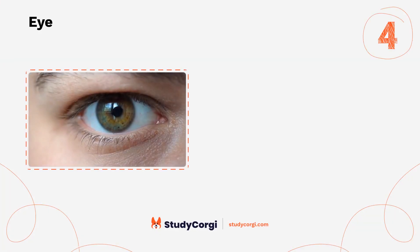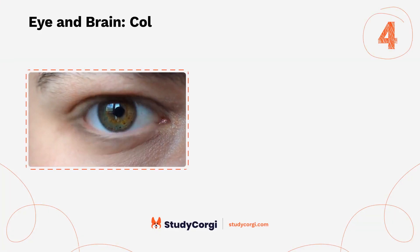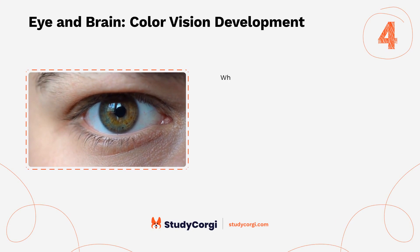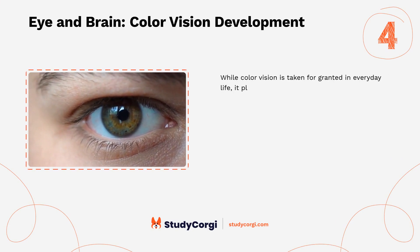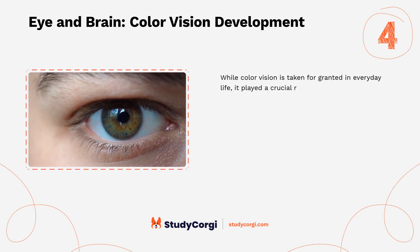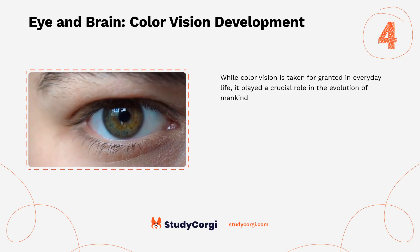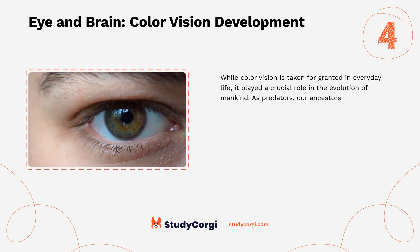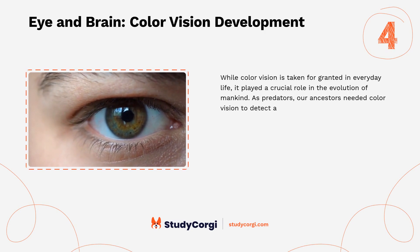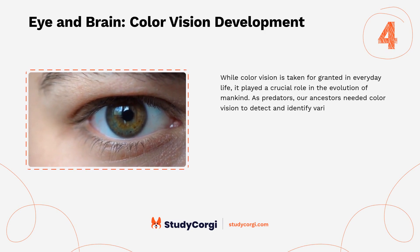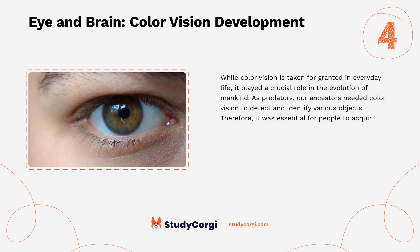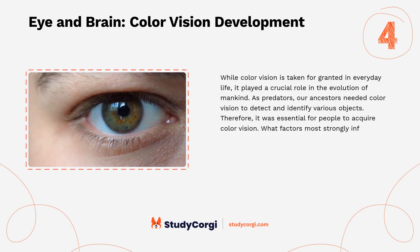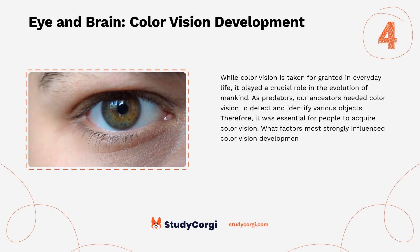Eye and brain: color vision development. While color vision is taken for granted in everyday life, it played a crucial role in the evolution of mankind. As predators, our ancestors needed color vision to detect and identify various objects. Therefore, it was essential for people to acquire color vision. What factors most strongly influenced color vision development?